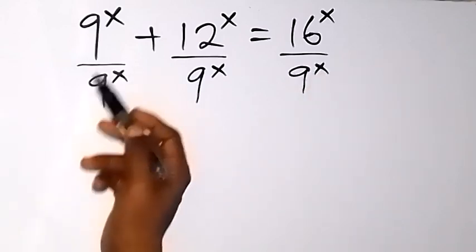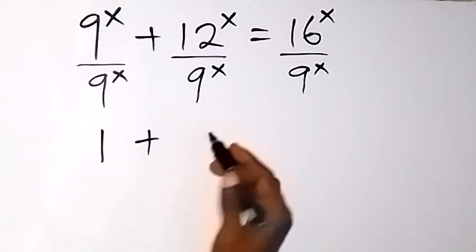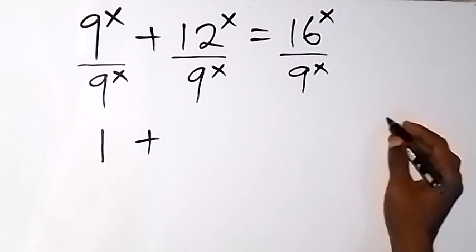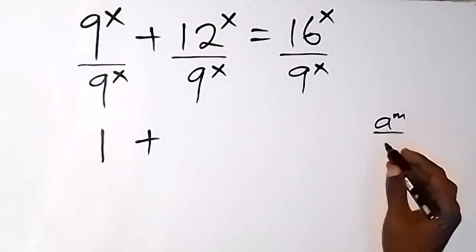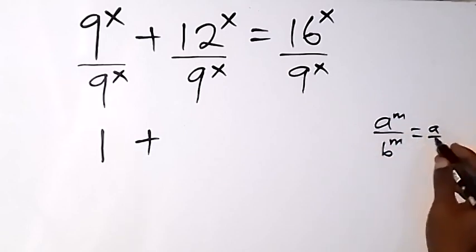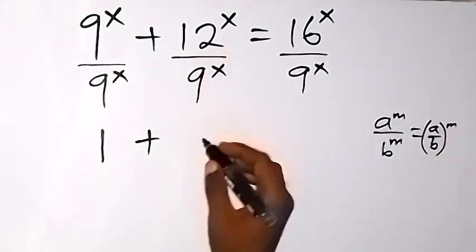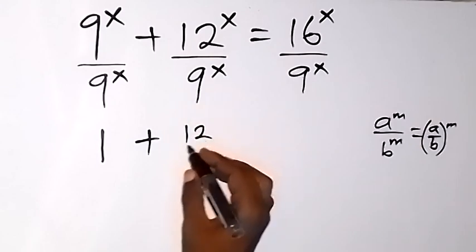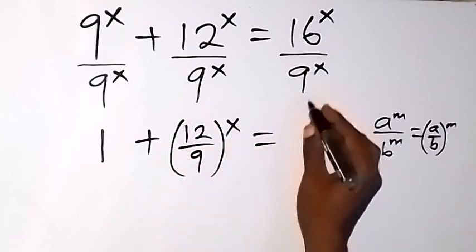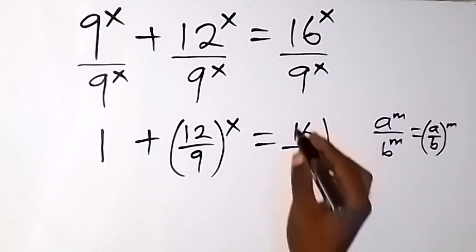These divide each other and we have 1, then plus. This can be written from the law of indices: when we have a raised to power n divided by b raised to power n, we can write it as a over b raised to the power of n. So we can write this as 12 divided by 9, raised to power x, which equals 16 over 9, raised to power x.